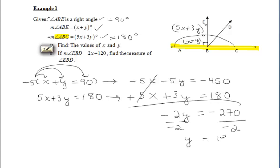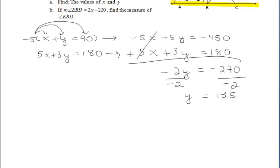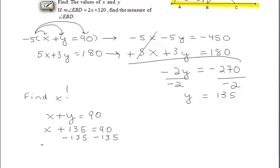Solving for y, we get that y is 135. We want to find the values of both x and y in part a. Well, using one of our initial equations, we know that x plus y must equal 90. And we now know that y is 135. So solving that equation for x, we can subtract 135 from both sides of the equation. We get that x is going to be negative 45.